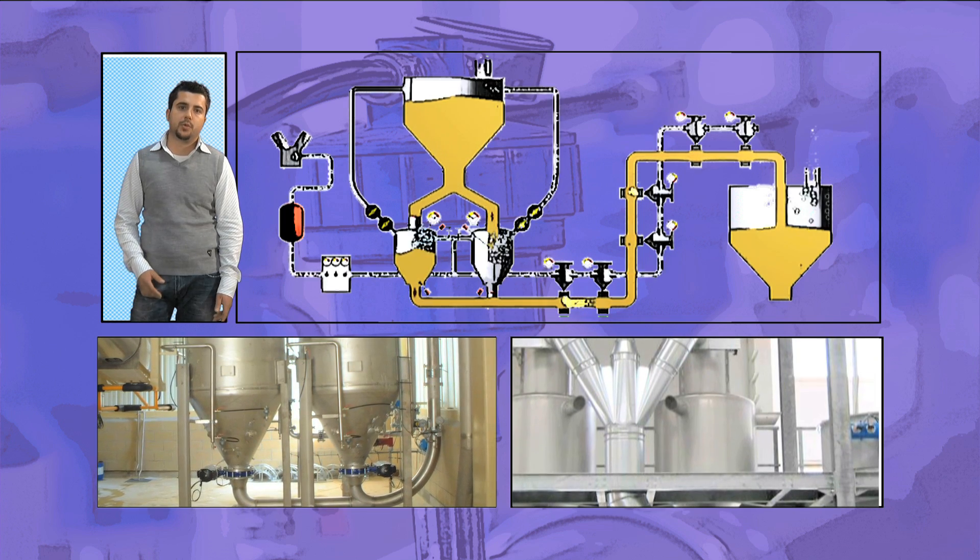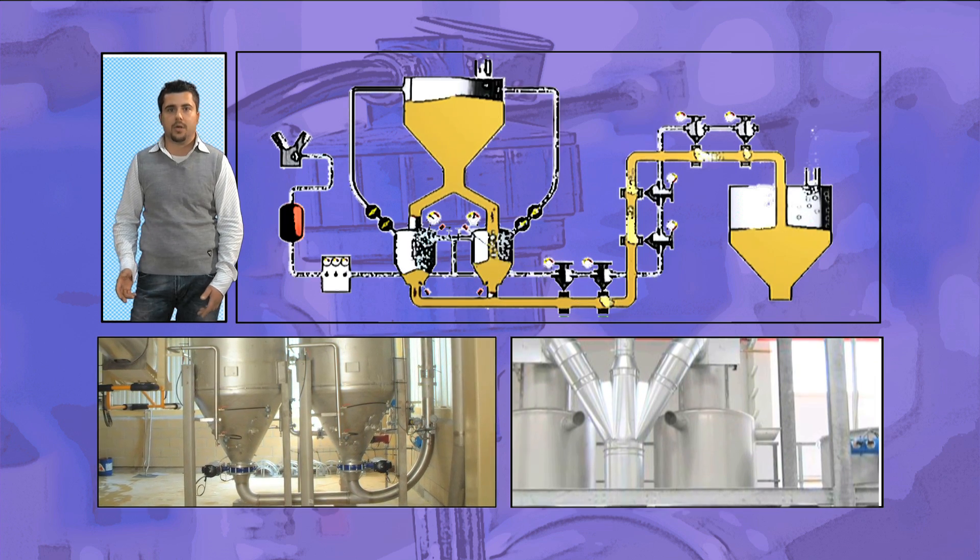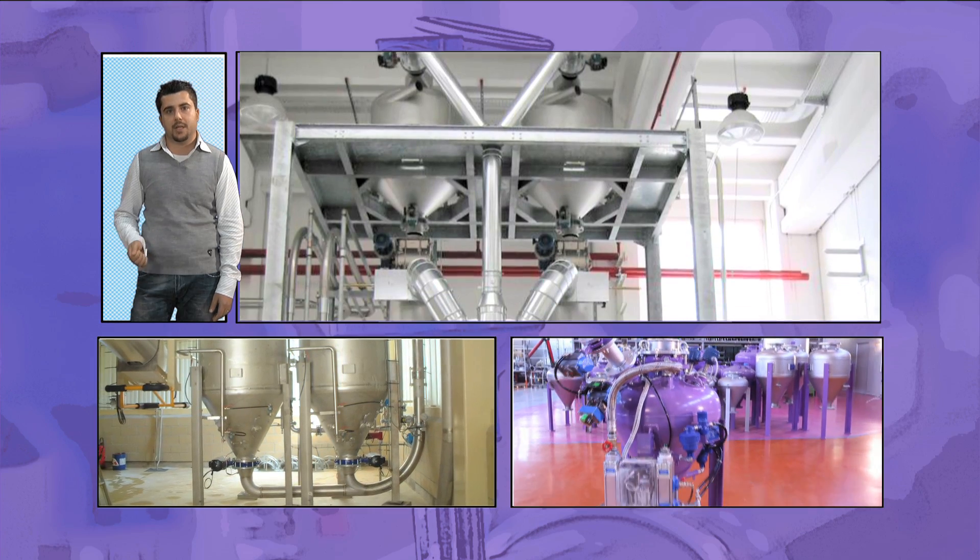The full pipeline continuous transport method consists of two TPA vessels connected to a single pipe which work alternately in order to achieve a continuous transport cycle.